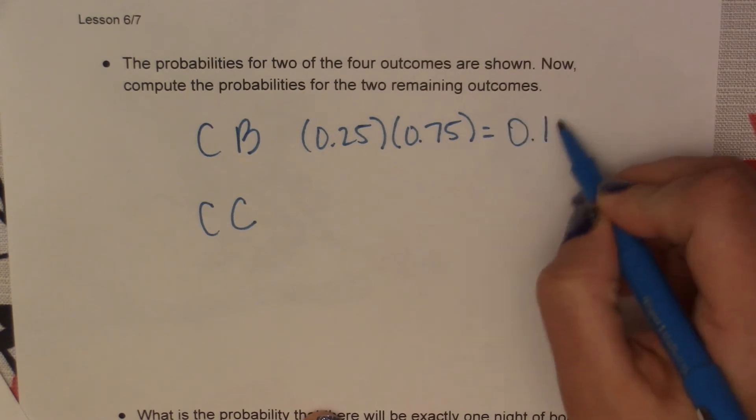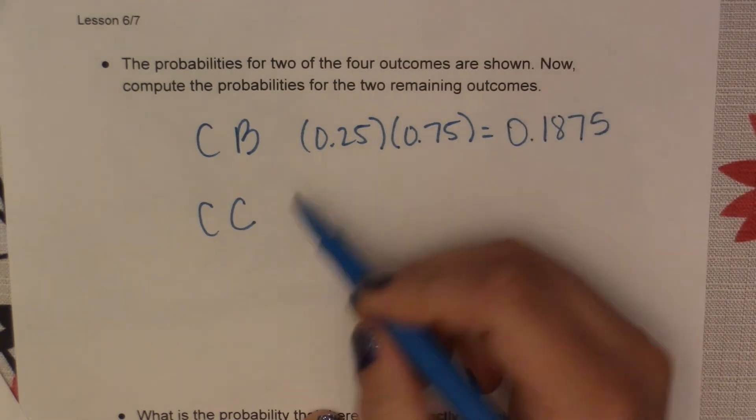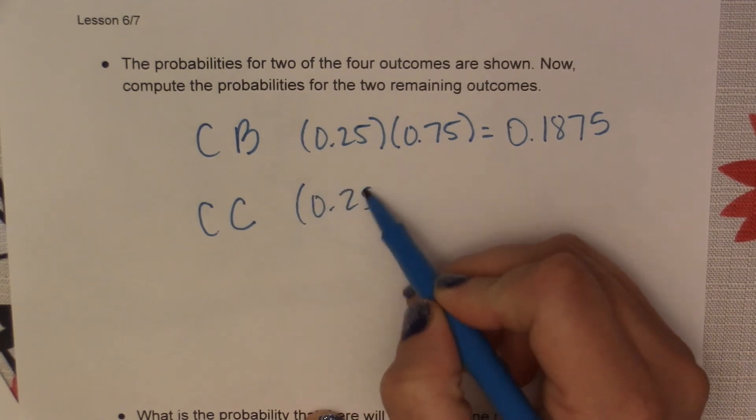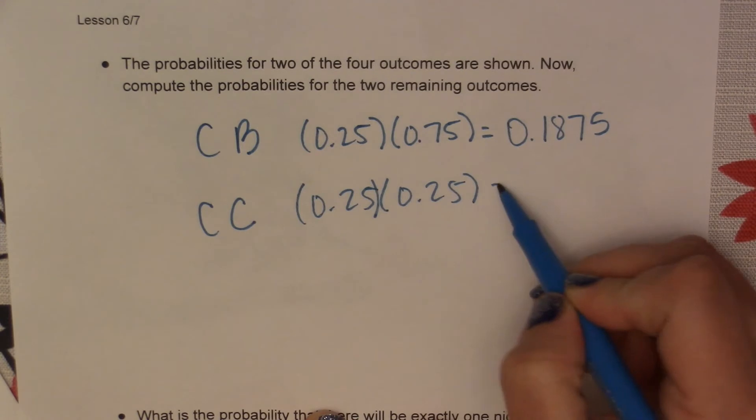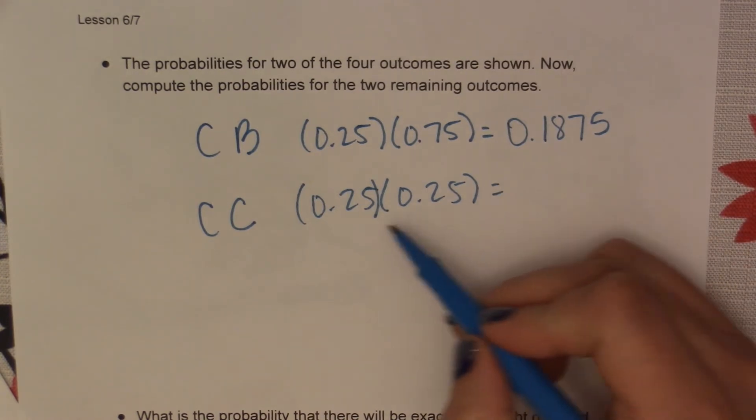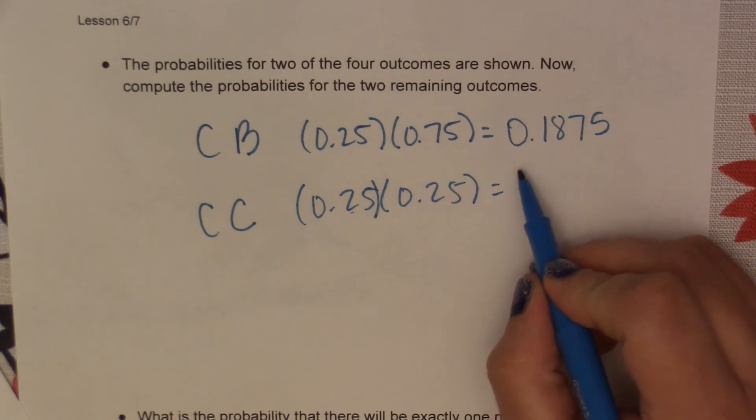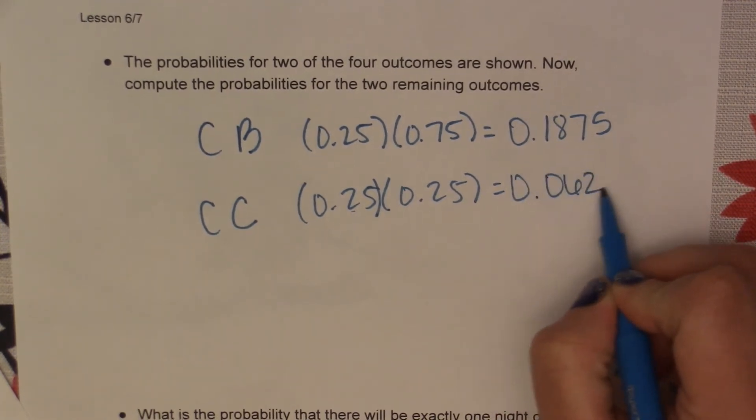And then for our card game, 0.25 times 0.25. And when we multiply these two probabilities together, we get 0.0625.